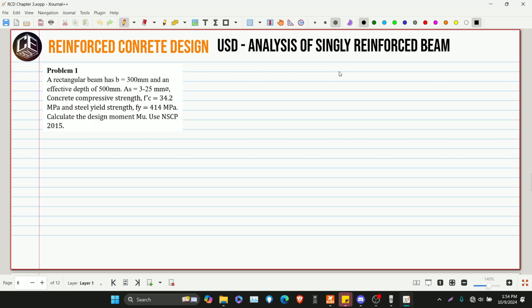Problem number one for reinforced concrete design, USD analysis of singly reinforced beam. A rectangular beam has a width of 300mm and an effective depth of 500mm. AS is equivalent to 3 25mm diameter bars. Concrete compressive strength F'C is equivalent to 34.2 MPa, and steel yield strength FY is equivalent to 414 MPa. Calculate the design moment.